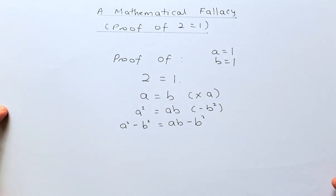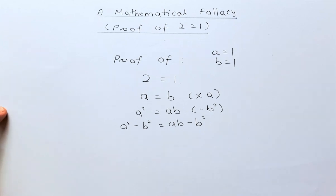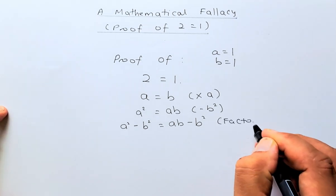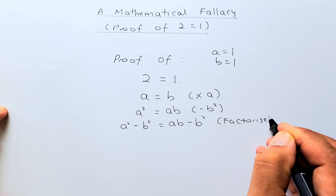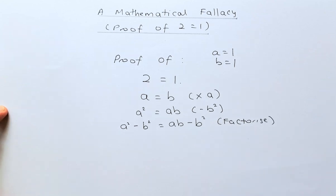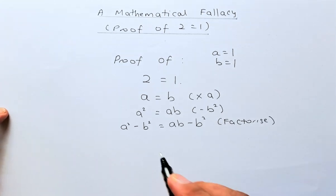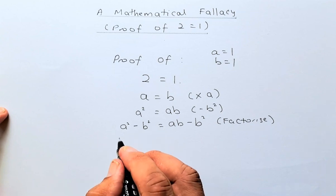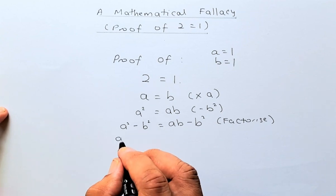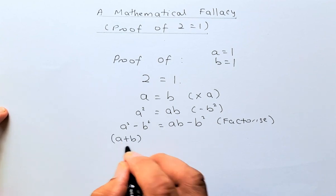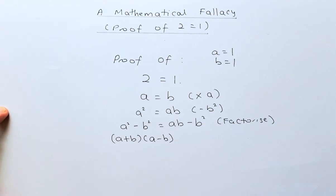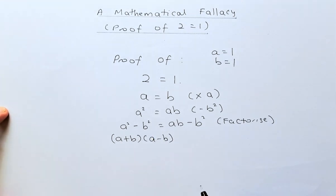Now, what we're going to do is factorize. If you know factorization, this is the difference of two squares. A squared minus B squared is the same as A plus B, times A minus B. You can check this by expanding and you'll get that answer again.